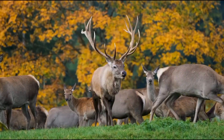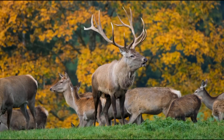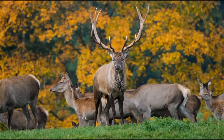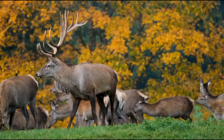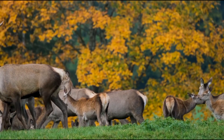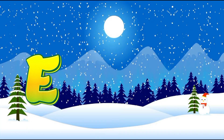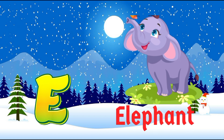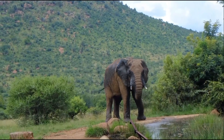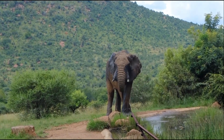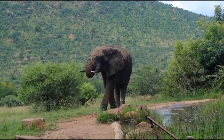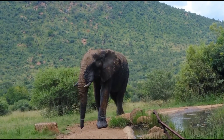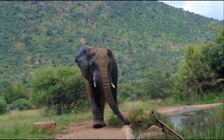Deer. E for Elephant. E is for Elephant. Q, R, S, T, U, V, W, X, Y, and Z. Elephant. Now I know my ABCs. Next time won't you sing with me.